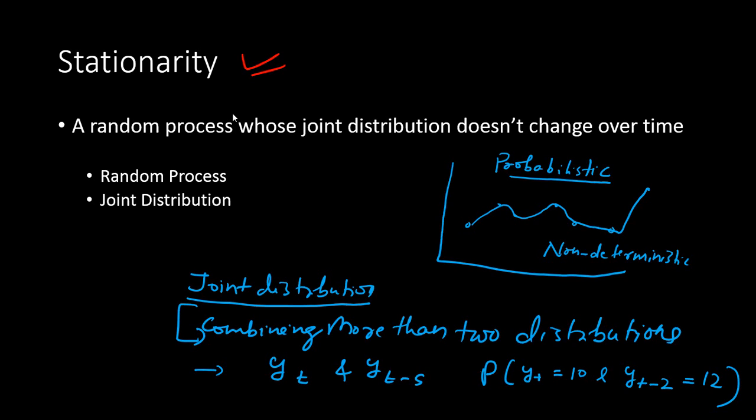In this video I am going to talk about the property of stationarity. This is an important property of a time series process. A random process or stochastic process is known to be stationary when the process whose joint distribution doesn't change over time is known to be a stationary process.